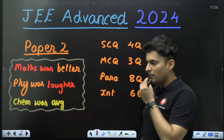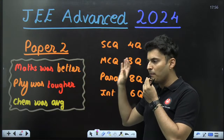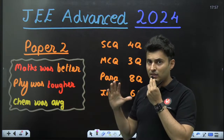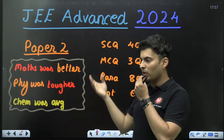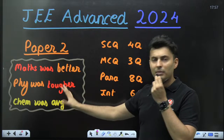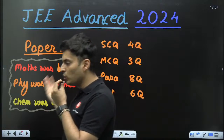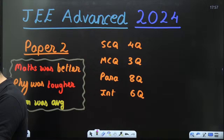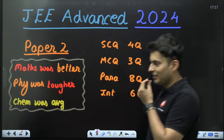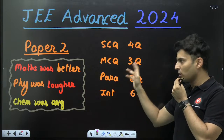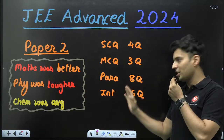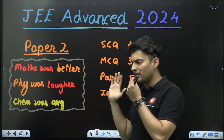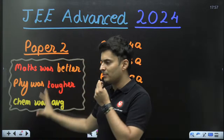In Paper 2, maths was comparatively slightly better. Physics was slightly on the tougher side based on initial reactions, though the sample set is small and may change. Chemistry was as expected — not much change there. The pattern for Paper 2 was: SCQ four questions, MCQ three questions, paragraph eight questions, and integer six questions — paragraph type replaced matrix type, but overall it is very similar to previous year patterns.